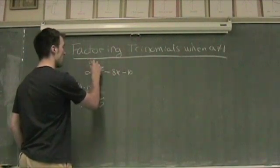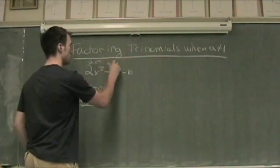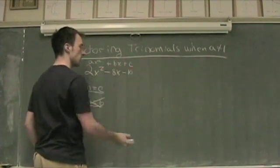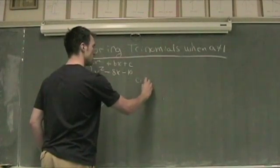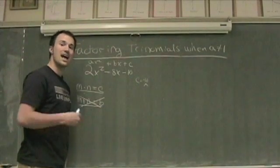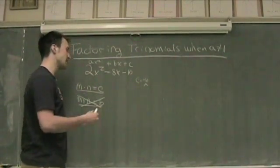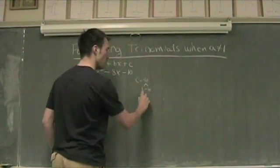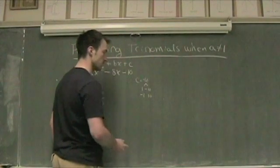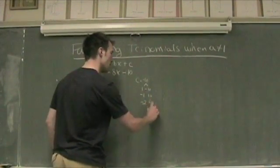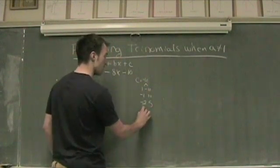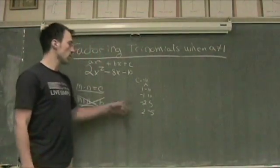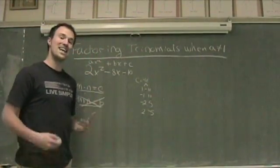Again, AX squared plus BX plus C. C right now is equal to negative 10. We've got to find two numbers that are going to multiply to give me negative 10. There's always 1 and negative 10, or negative 1 and positive 10. There's also negative 2 and positive 5, and positive 2 and negative 5. So these are all the numbers that are going to give me negative 10.